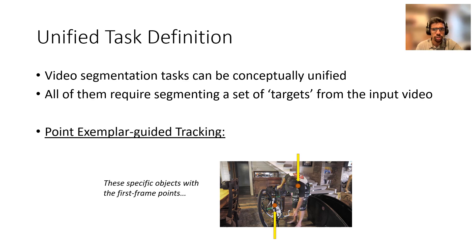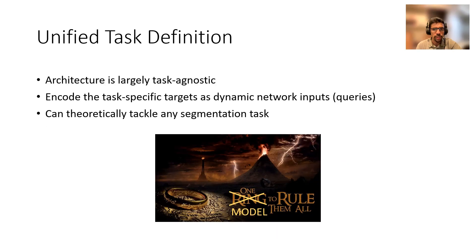And finally, the recently introduced point exemplar guided tracking task is simply a more constrained version of VOS where we're only given a single point inside the object in the first frame. By formulating the tasks in this way, we can design an architecture where the model itself is task agnostic and the task specific targets are encoded as a set of dynamic input queries.